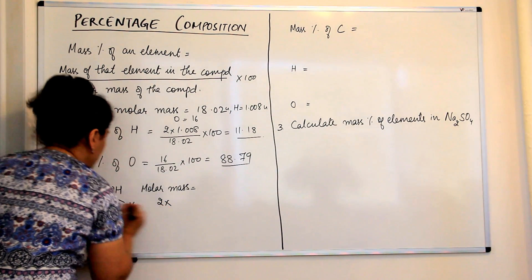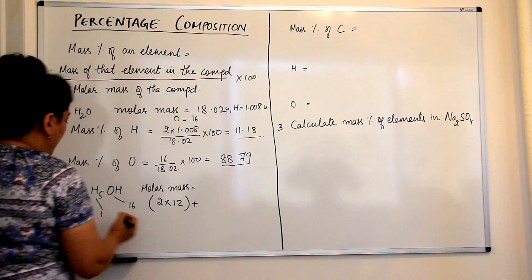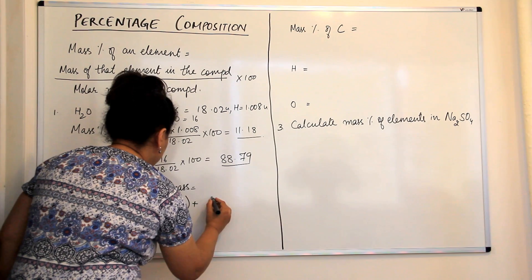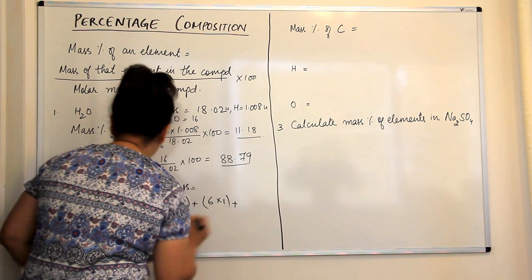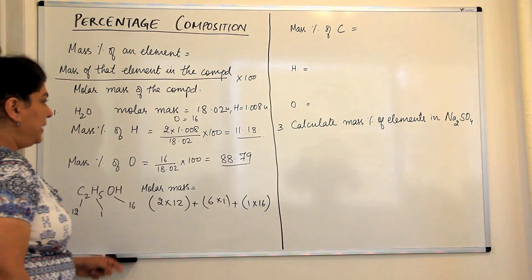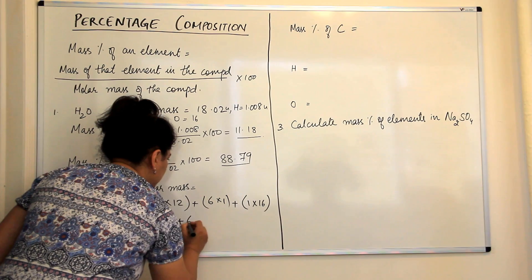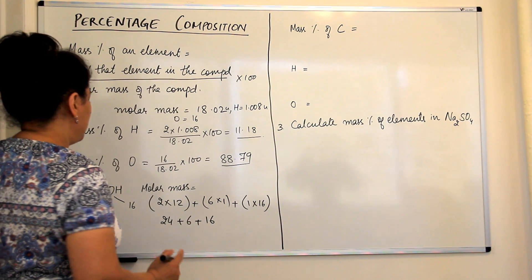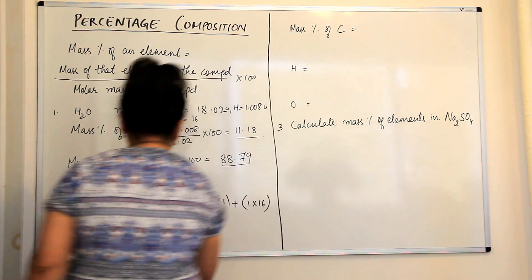To calculate the molar mass of ethanol: there are 2 carbons × 12 amu, plus 6 hydrogens (five in C₂H₅ and one in OH) × 1 amu each, plus 1 oxygen × 16. So: 2 × 12 = 24, plus 6, plus 16. The molar mass of ethanol is 46 u.